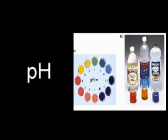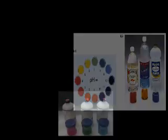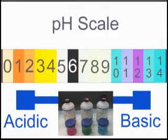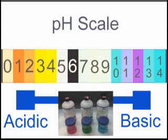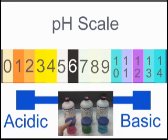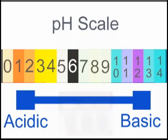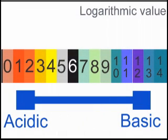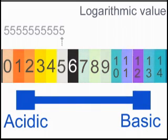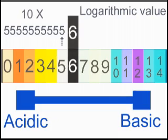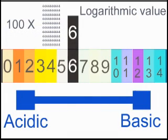pH is a term used to indicate the alkalinity or acidity of a substance as ranked on a logarithmic scale from 1.0 to 14.0. Acidity increases as the pH gets lower. High pH is considered alkaline or basic. The term logarithmic means the difference between two whole values is tenfold. For example, a pH of 5 would be 10 times more acidic than a pH of 6, and a pH of 4 would be 100 times more acidic than a pH of 6.